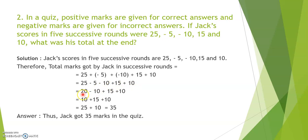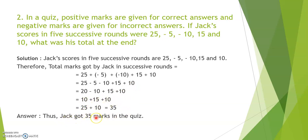In the next step: 25 minus 5 is 20; minus 10 gives 10; then plus 15 and plus 10 are carried down. 10 plus 15 plus 10 gives 35. So Jack got 35 marks in the quiz.